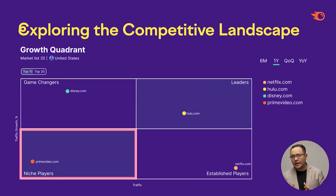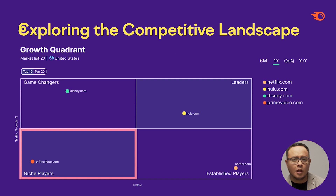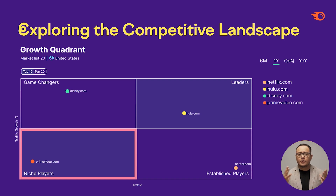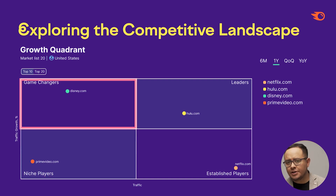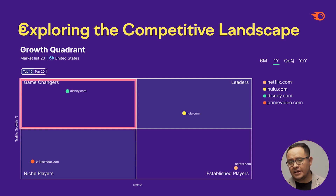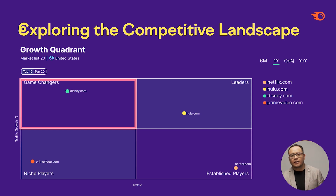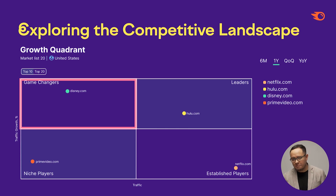Niche players — in this case Amazon Prime — are brands that have a comparatively low traffic volume and their growth rate is fairly low compared to the overall market. Game changers are companies that also have low traffic volumes but a higher growth rate than the market average. Startups, large companies entering new markets, or companies doing magic with their marketing usually fall into this category.